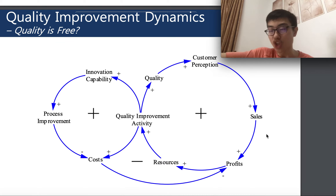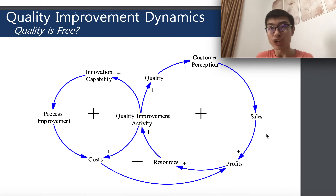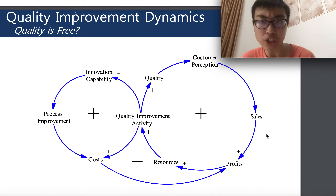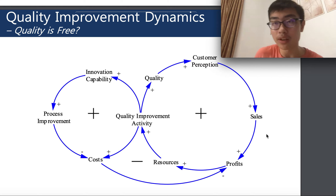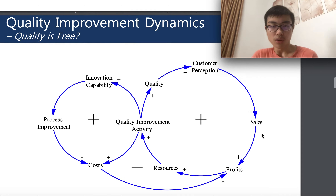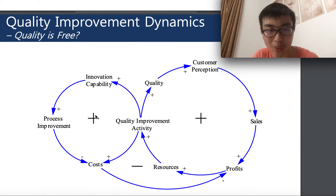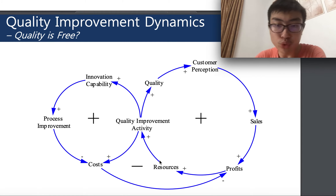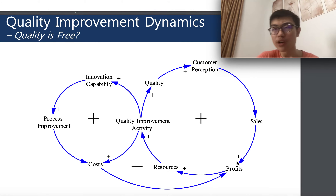When you spend money on employee training and quality improvement, you boost customer loyalty, improve employee motivation and loyalty, which is effective in the long run. Looking at this graph, there is a logical cycle: when you input resources for quality improvement, you improve quality, improve customer perception and loyalty, improve sales, and improve profit. So improving quality can, in the long run, improve your profits through improved customer loyalty and perception.